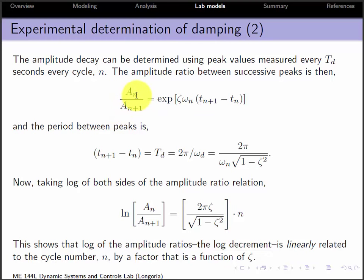between two peaks, let's say n is the number of one peak, and then the next one is aₙ₊₁, you can show that that ratio is simply the exponential, ζωₙ, and the time between those. The thing to note is that this time difference is something that we can measure. This is also something that we can measure.